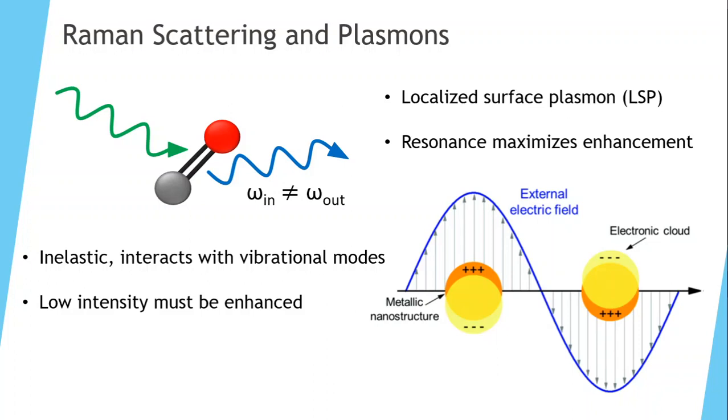When we bind the molecule we want to identify to one of these metal clusters, this is what creates surface-enhanced Raman scattering. This has been achieved experimentally since the 1970s, but the theoretical picture is still an active area of research. This is because there are four distinct mechanisms that combine to create a total overall enhancement. The first is plasmon resonance, which I just mentioned.